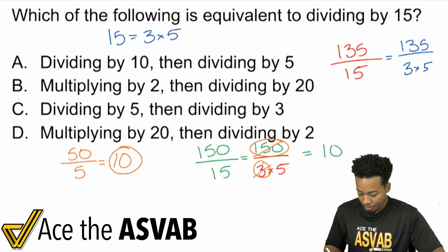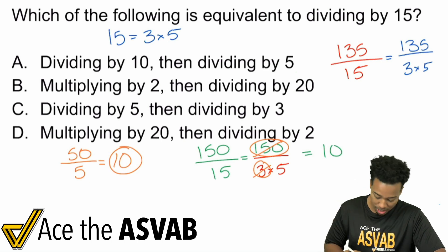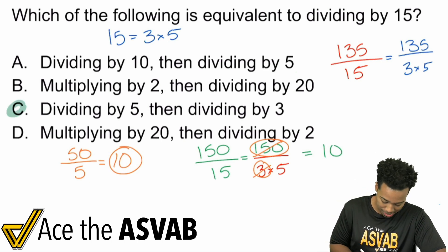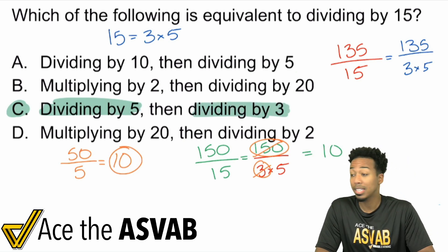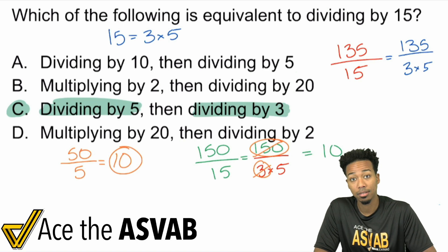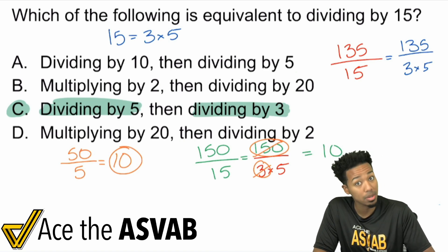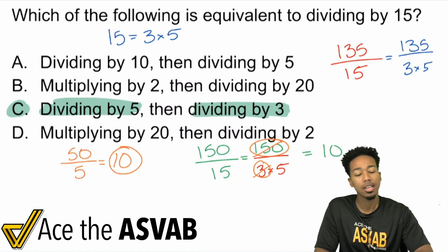And so that's why the answer here is going to be C. Dividing by 5 and then dividing by 3 is the same as dividing by 15. Same thing with dividing by 18. You can divide by 6, then divide by 3 because 6 times 3 is 18.